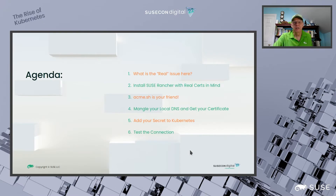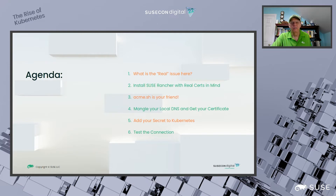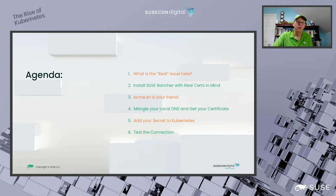Just a quick look at the agenda for today's topic. We'll be looking at what the real issue is here, installing Rancher with real certs in mind, and taking a look at acme.sh — a wonderful open source script that helps you interface with the certificate authorities. We'll look at how to change our DNS to get that certificate back and available to install into your system, then adding the secret to the Kubernetes cluster that Rancher server is running on, and finally testing our connection.